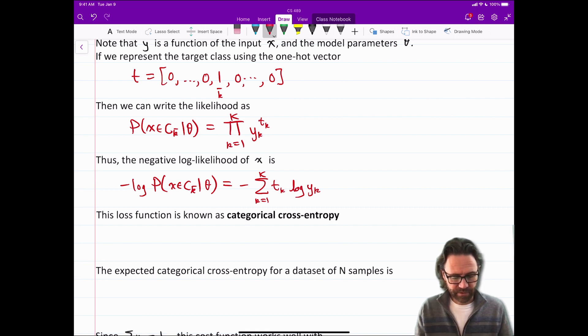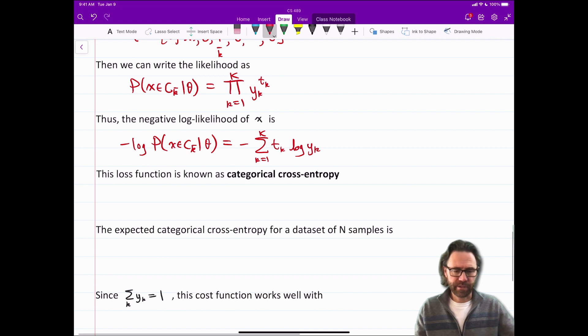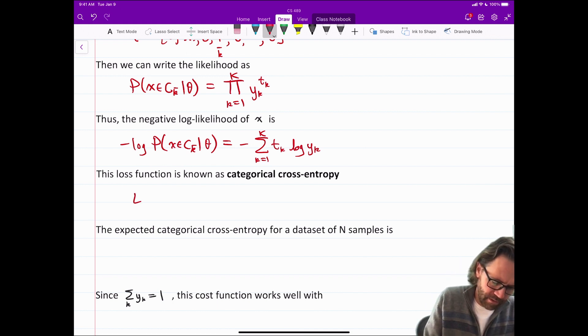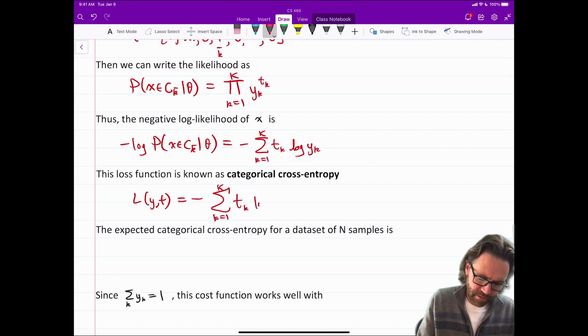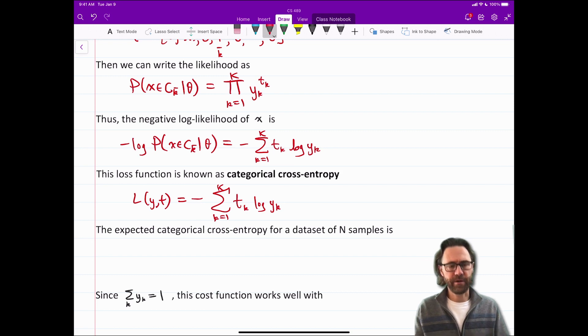So this loss function is known as categorical cross entropy. L of Y T is negative the sum over the categories T sub K log Y sub K. And again, that log could be natural logarithm. It doesn't really matter.